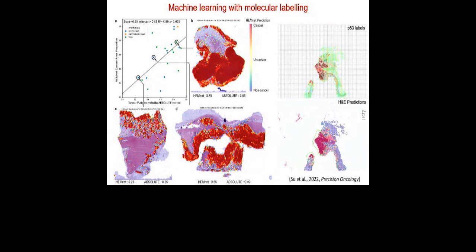The model worked quite well. This is testing on the TCGA data — a completely independent dataset. We can see the classification of uncertain regions appearing in yellow in the middle, and certain classifications as cancer or non-cancer. Our classification of the cancer part with high certainty is consistent with the pathological annotation shown by the green line. This is a baby step where we only look at one gene and train the model to do classification, and it produces quite reasonable results.